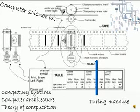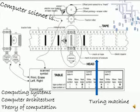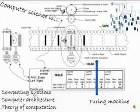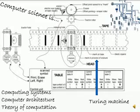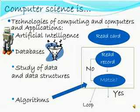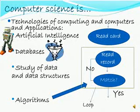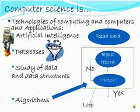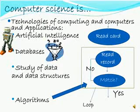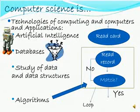Computer architecture involves the study and use of mathematical logic to design electronic circuits. Theory of computation covers what can or cannot be computed and how efficiently problems can be solved using a model of computation — an algorithm. Technologies of computing, artificial intelligence (the intelligence of machines), databases (structured collections of records or data), and the study of data and data structures — a way of storing data in computers so it can be used efficiently.